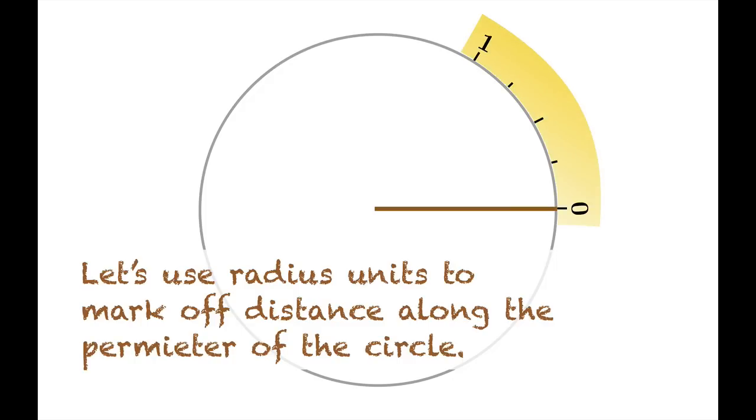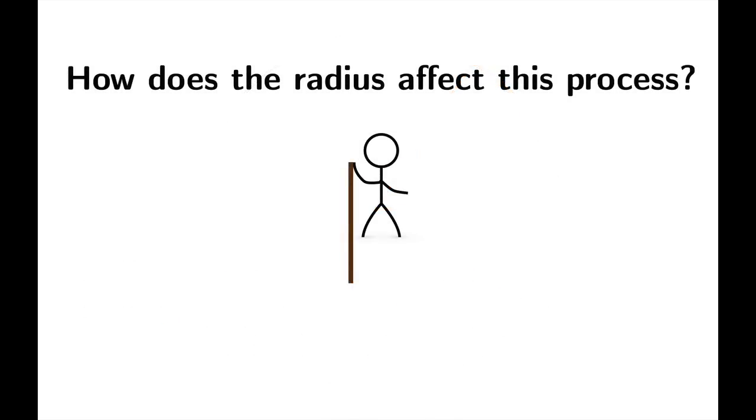You could take your rope, measure off one radius around the outside of the circle, and the question we want to ask is what have you really measured? What have you done when you take one radius unit along the edge of the circle? And how does the radius actually affect this process?